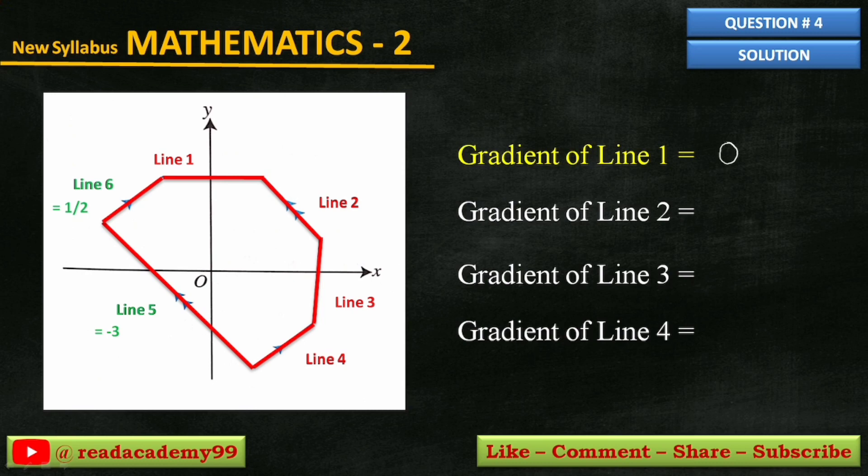Line 2 is parallel to line 5, so the slope of line 2 will be the same as line 5, which is minus 3.